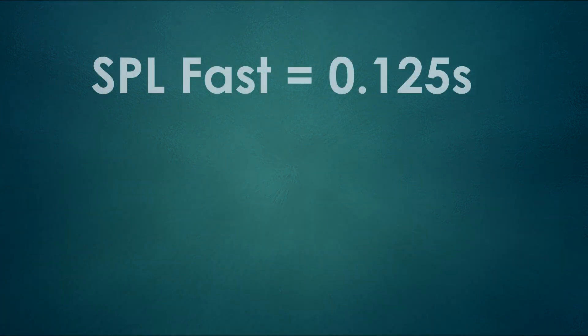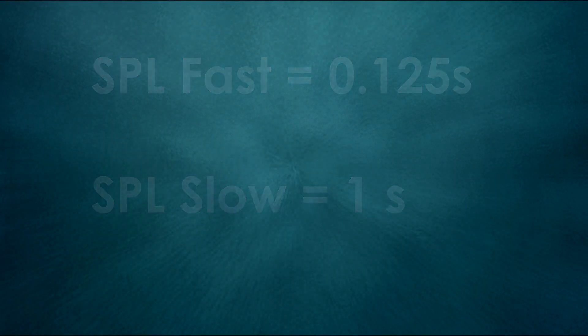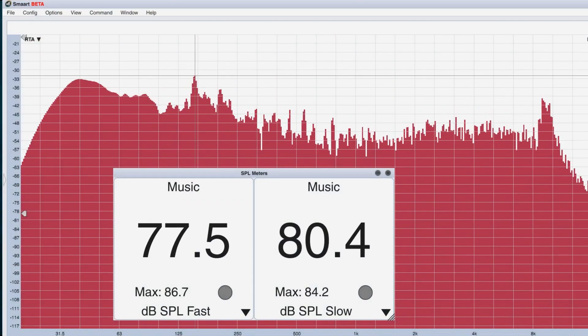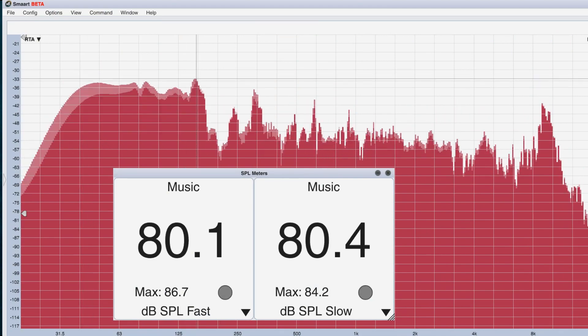Most handheld meters offer SPL fast, with an integration time of an eighth of a second, and SPL slow, with an integration time of one second. We can see here how the integration time affects the measurement.